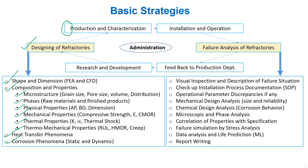Successful refractory installation and the steelmaking process may boost the performance of quality refractories. Thus, after processing of metal and thermal cycles, it is essential to perform failure analysis through a combination of production and operation knowledge. The key points to follow include visual inspection and description of the failure situation, and checking the installation process documentation, that is the standard operating procedure, along with operational parameter discrepancies, if any.